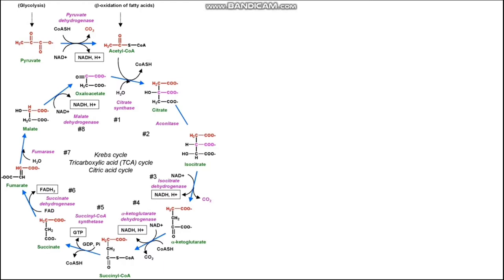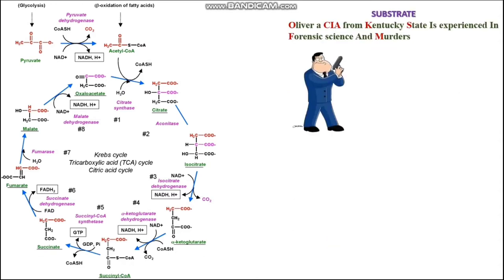So let's start. First let me start with the mnemonic to memorize the names of substrates. The mnemonic goes like this: Oliver a CIA from Kentucky state is experienced in forensic science and murders.